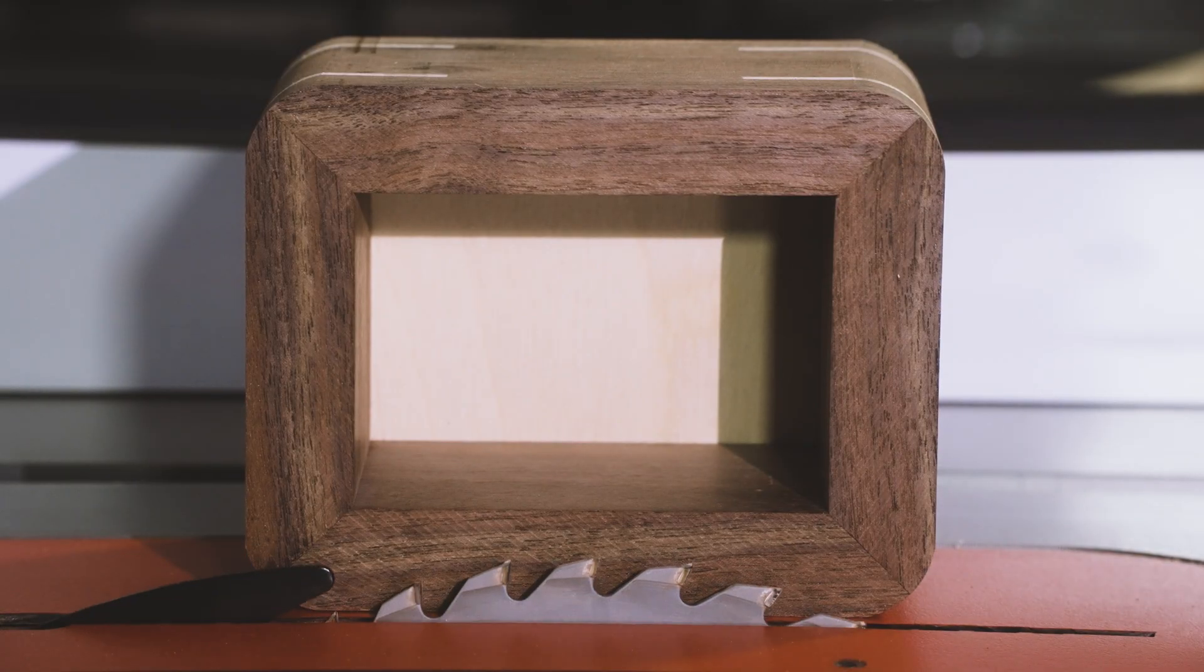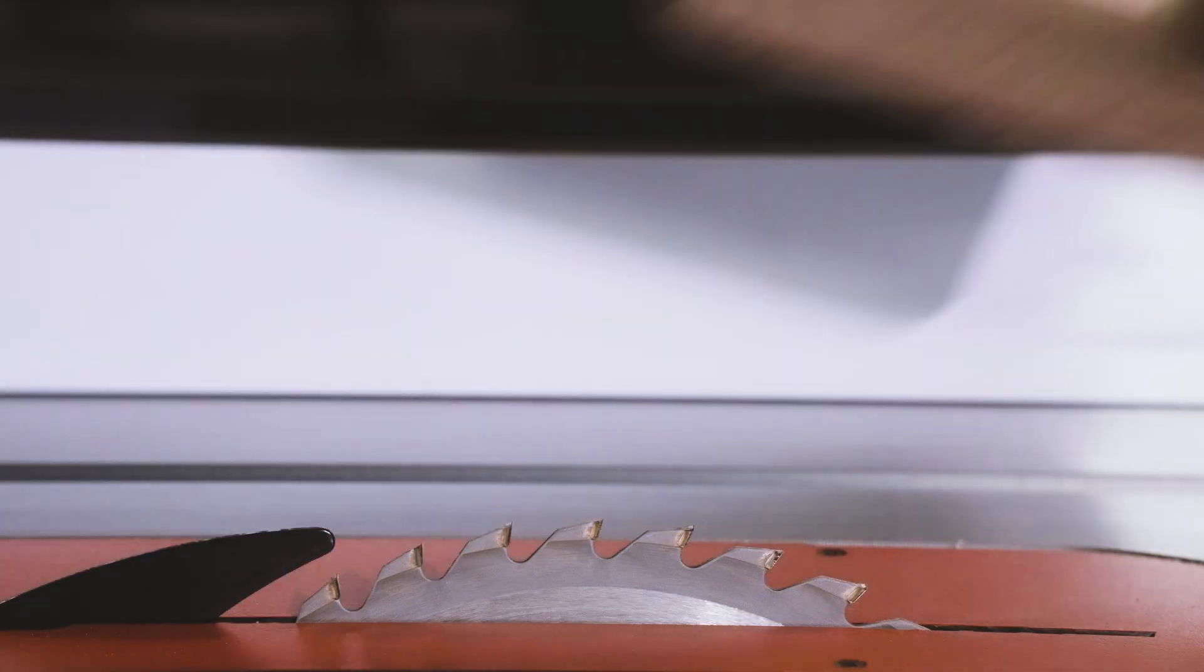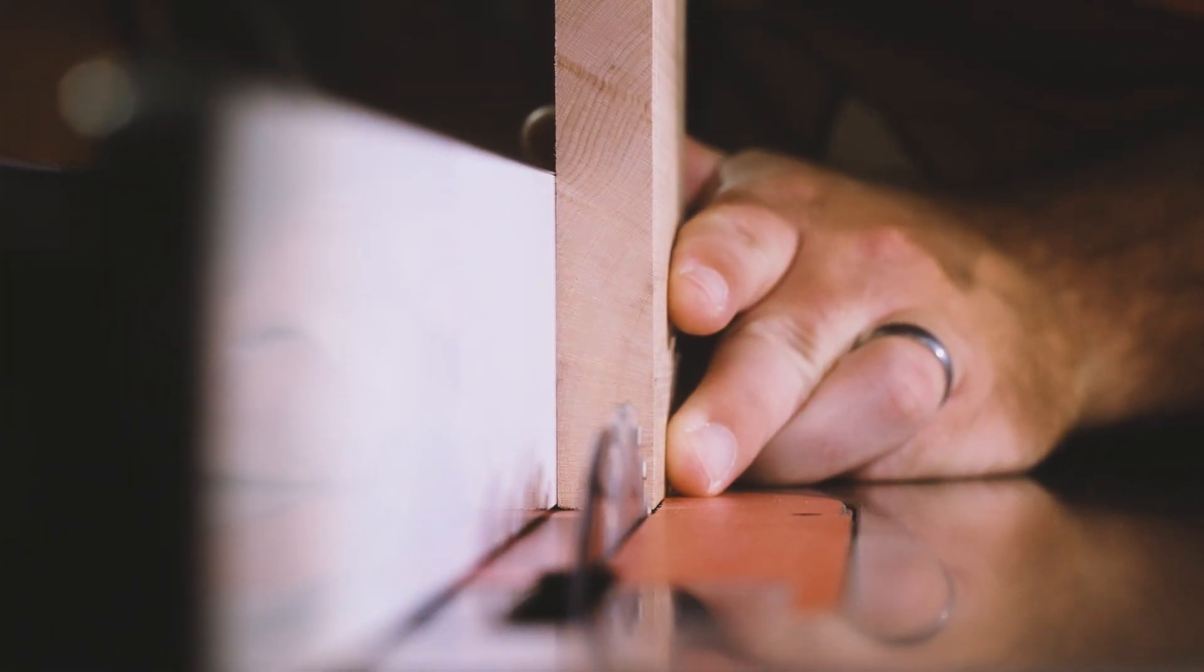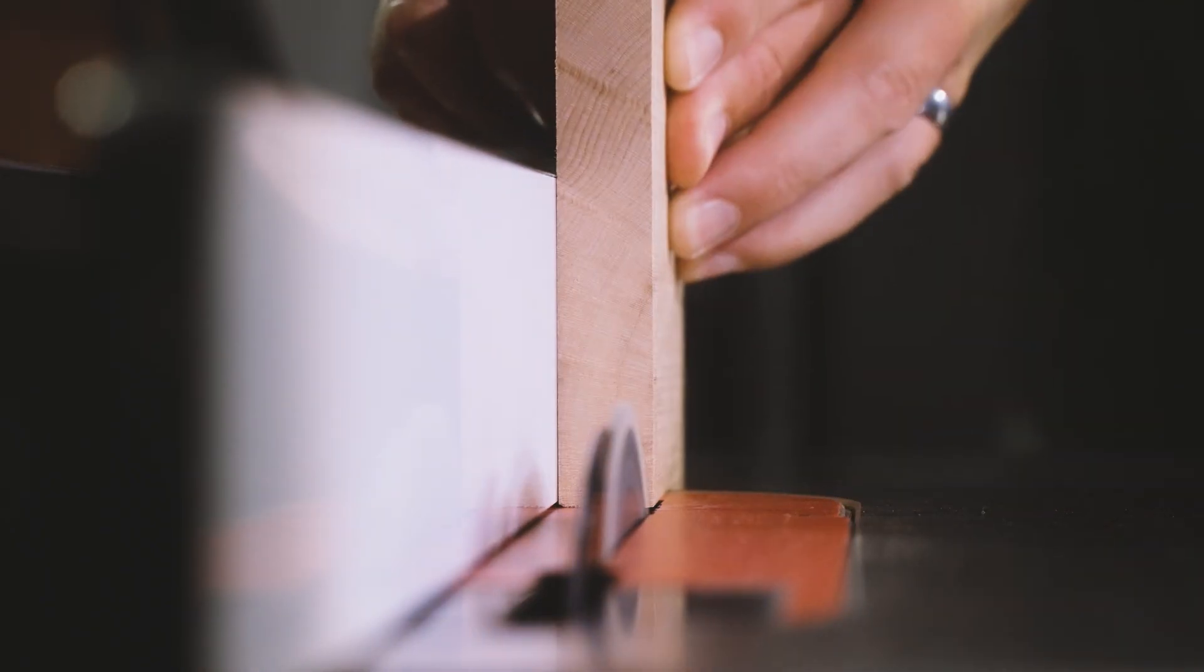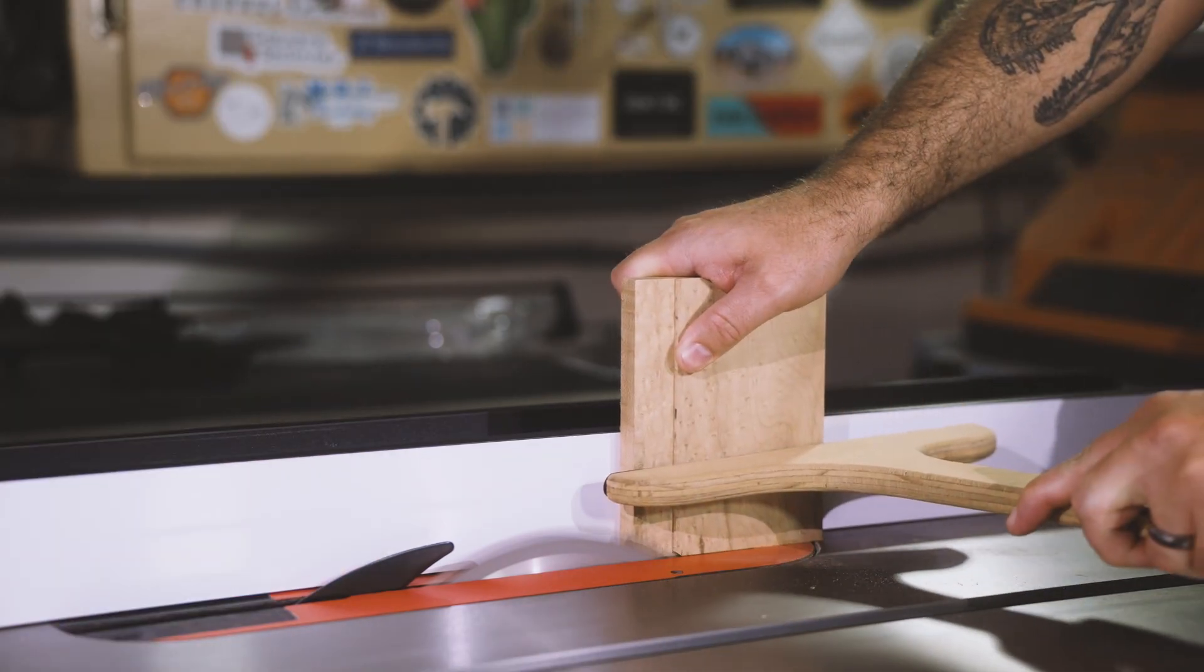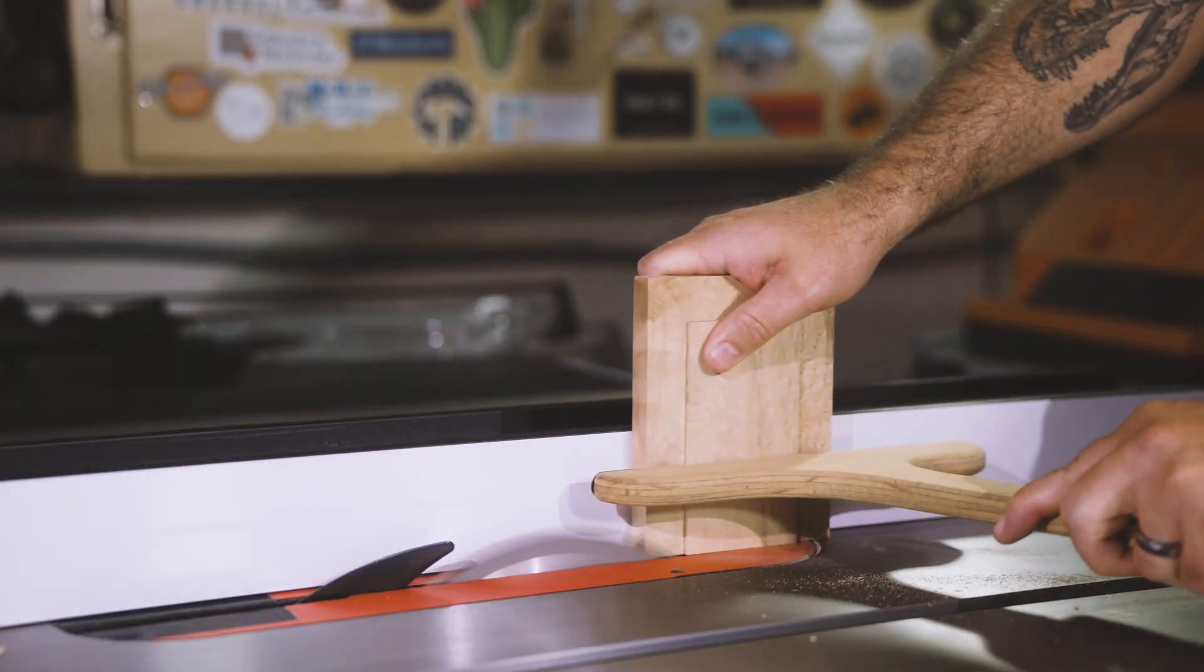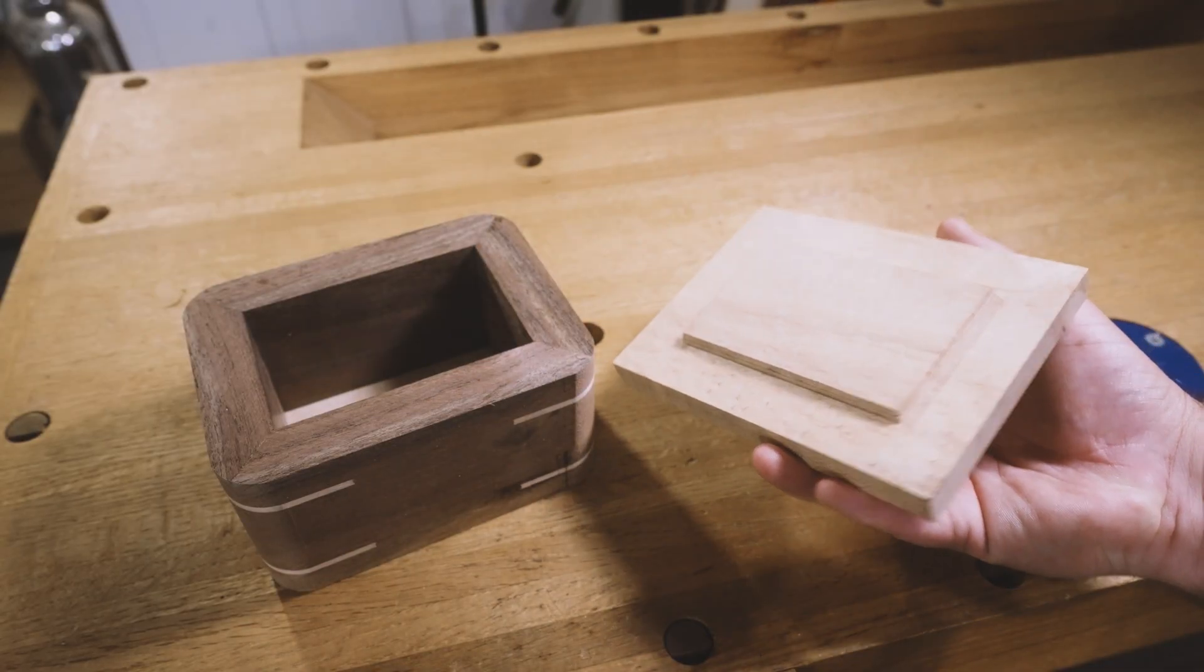I'm cutting a rabbet into the edges of my lid so it'll stay on my box. So I'm raising the table saw blade to match the thickness of my box sides and positioning the fence to just remove the thickness of my blade. Now the lid will fit nicely on top of the box.